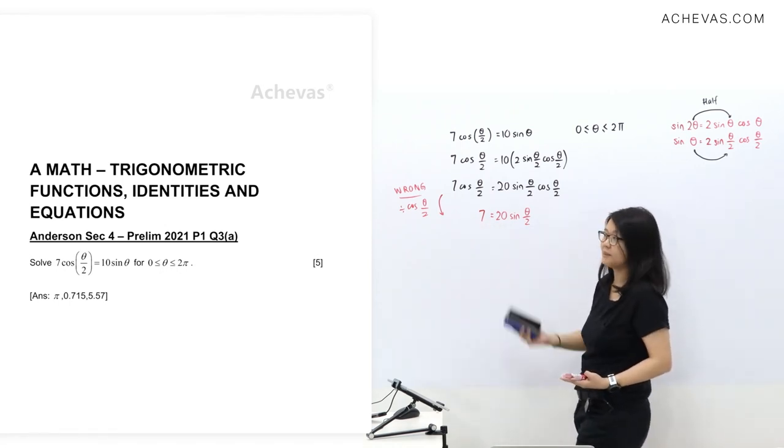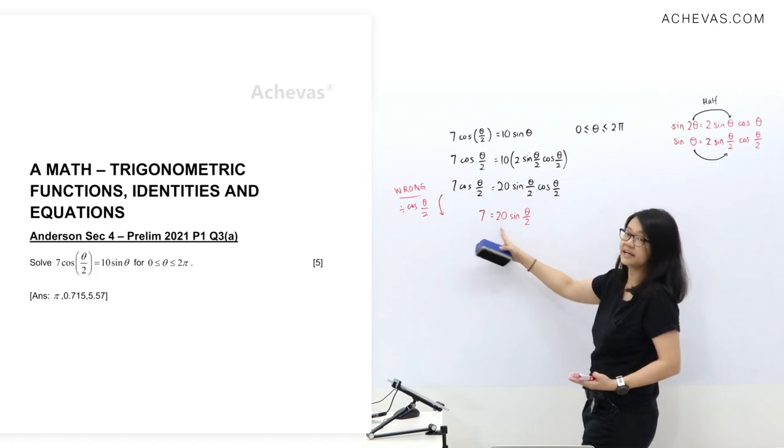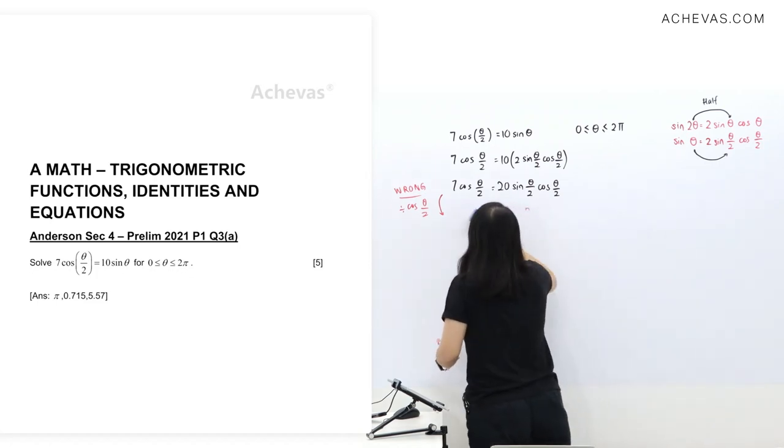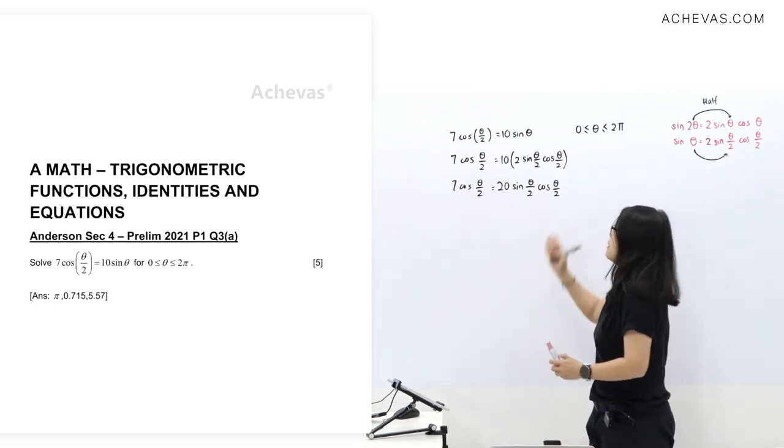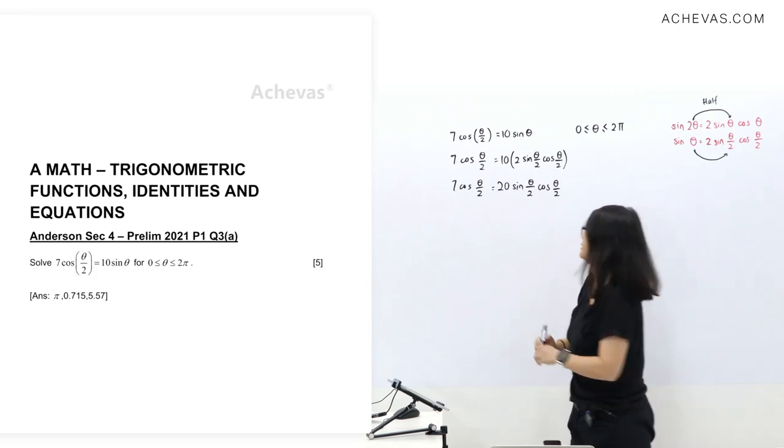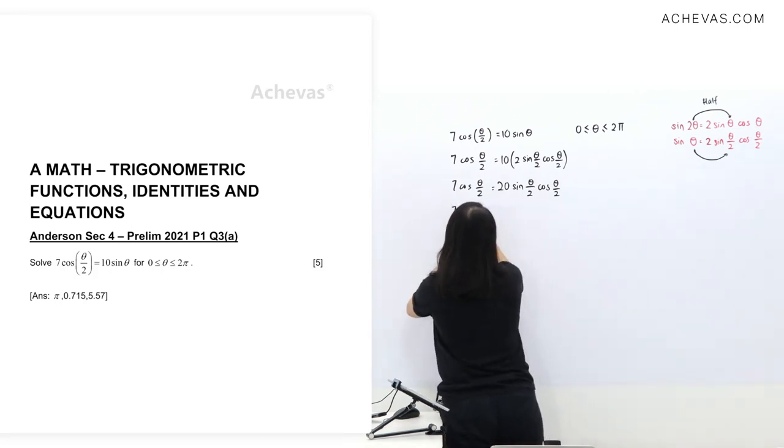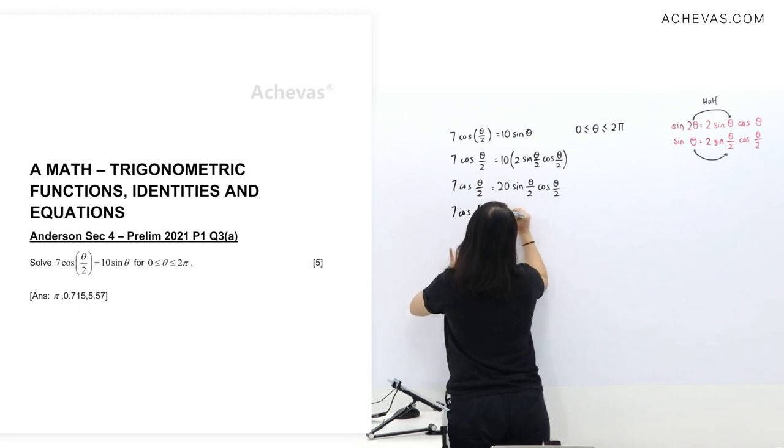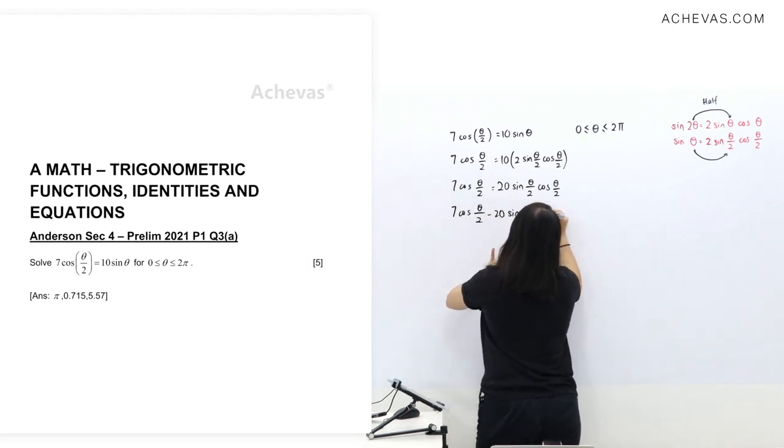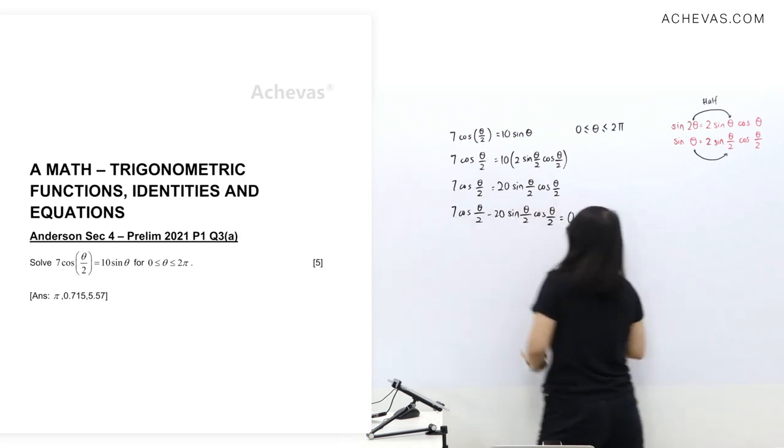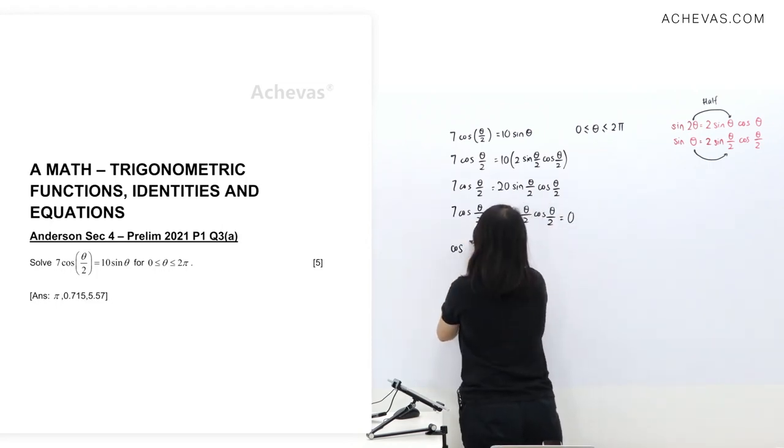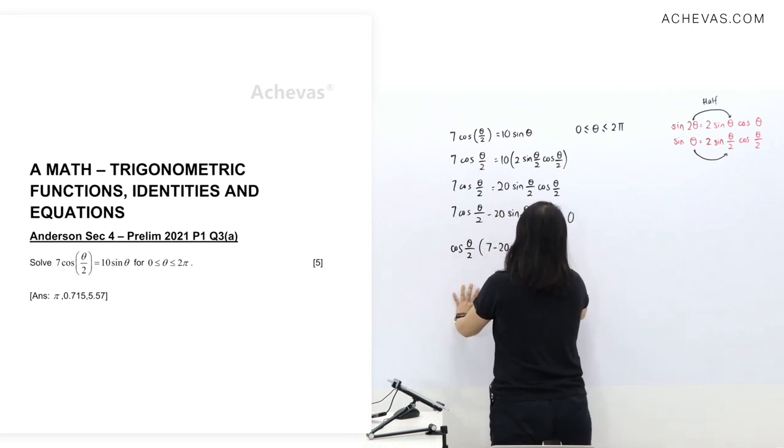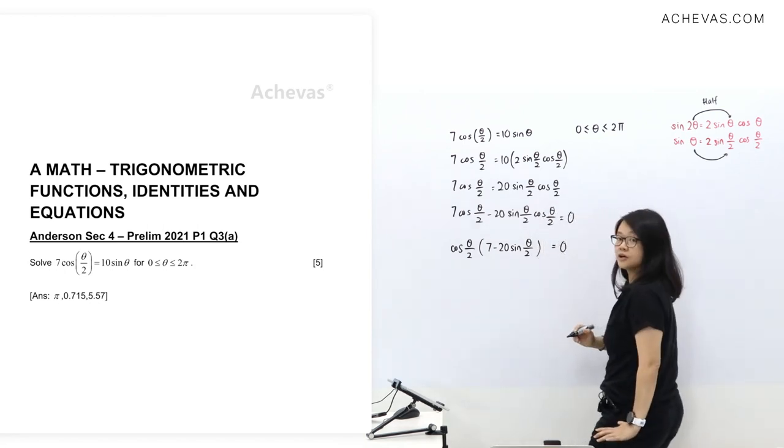If I can't divide cos theta over 2, I'm going to solve it because this one looks very easy and everybody can solve this. If I do not divide by cos theta over 2, the method will be moving things to one side and do a factorization. Look here. So the common term will be this one.